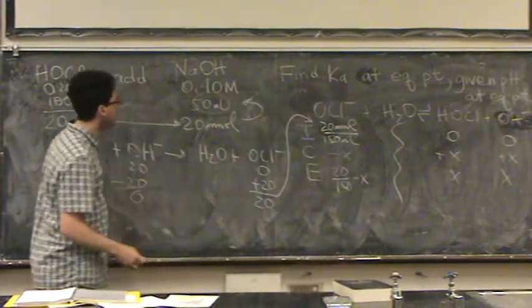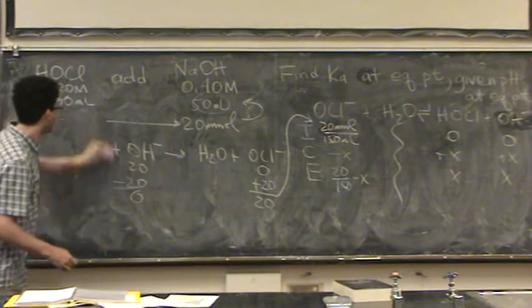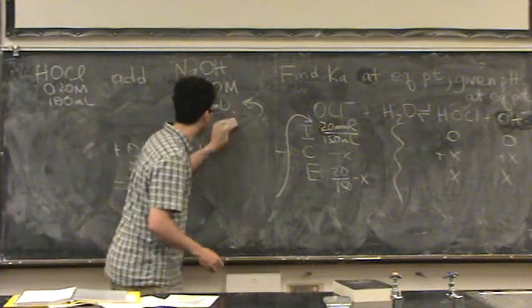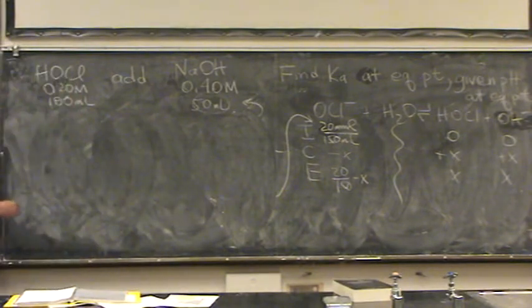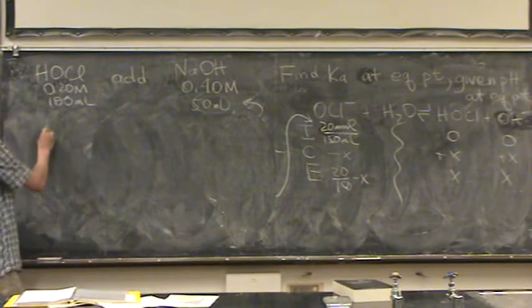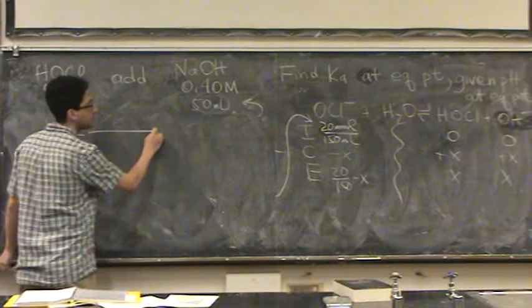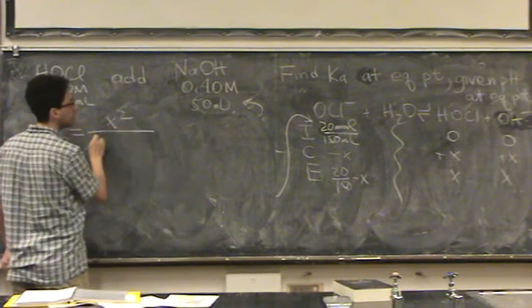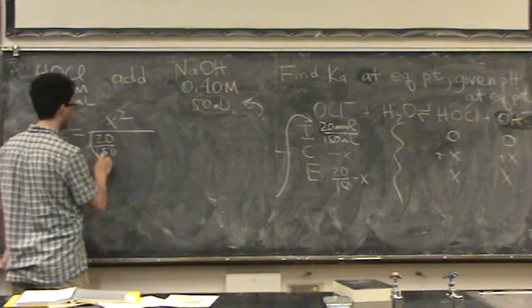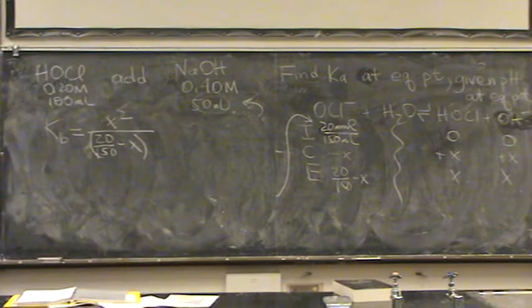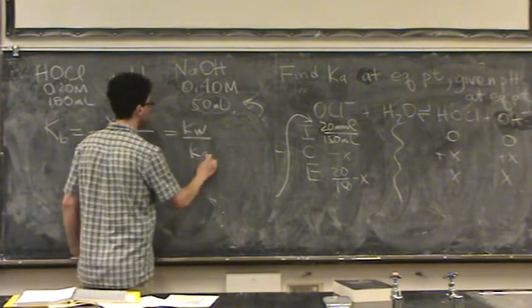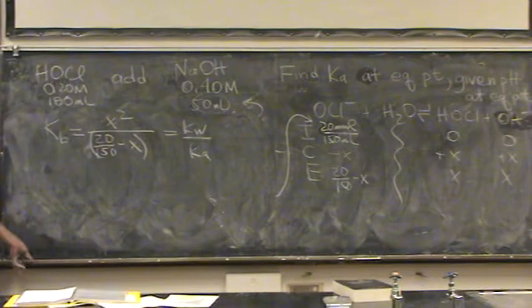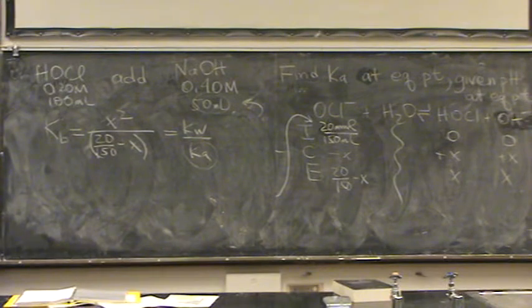Now what do I do? I want to find Ka. Let me erase this right hand side. It's the reverse of a typical type problem that we would do. If, let's say, I have Kb would equal X² over 20 over 150 minus X. So I have that. I know this is Kw over Ka. So I want to find Ka. I'm not given Kb, but what I am given in this sort of problem is X.